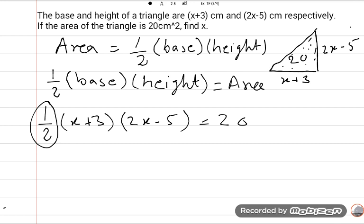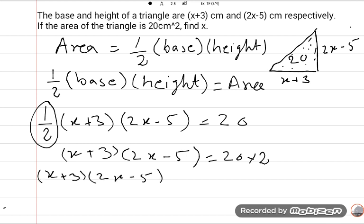Now multiply. The 1 upon 2, the 2 will go on the other side, and x plus 3 into 2x minus 5 is equal to 20 multiply by 2. x plus 3, 2x minus 5 is equal to 40.